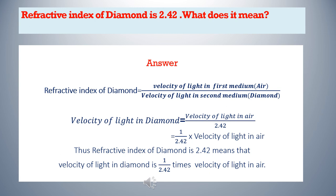Refractive index of diamond is 2.42 — what does it mean? You may get similar questions on any other medium. Answer: Refractive index of diamond equals the velocity of light in air divided by velocity of light in diamond, which is given as 2.42. On cross multiplying, velocity of light in diamond equals velocity of light in air divided by 2.42 — or, the velocity of light in diamond is 1/2.42 times the velocity of light in air.